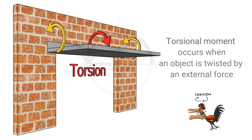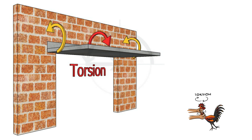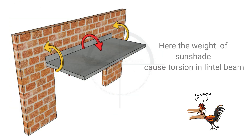Torsional moment occurs when an object is twisted by an external force. Here, the weight of the sunshade causes torsion in the lintel beam.